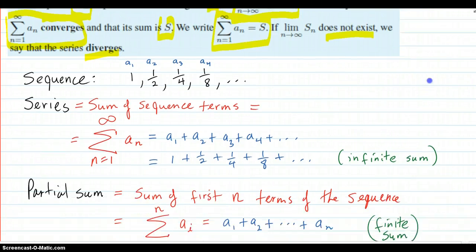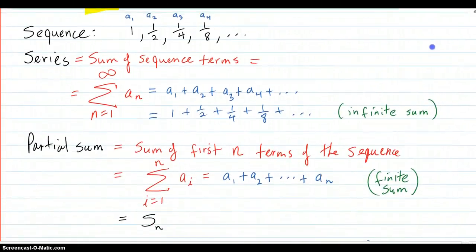So here's an example. Here's a sequence: one, one-half, one-fourth, one-eighth, continuing in that pattern. So the sequence is the list of numbers. The series is the sum of all the sequence terms from the first one to infinity, and that just is denoted this way.